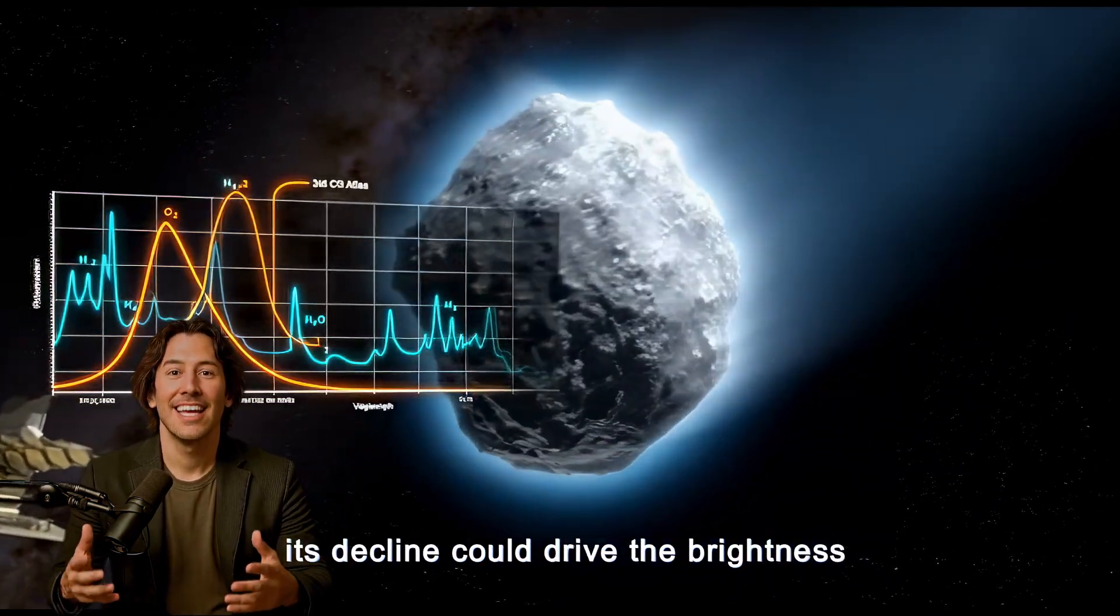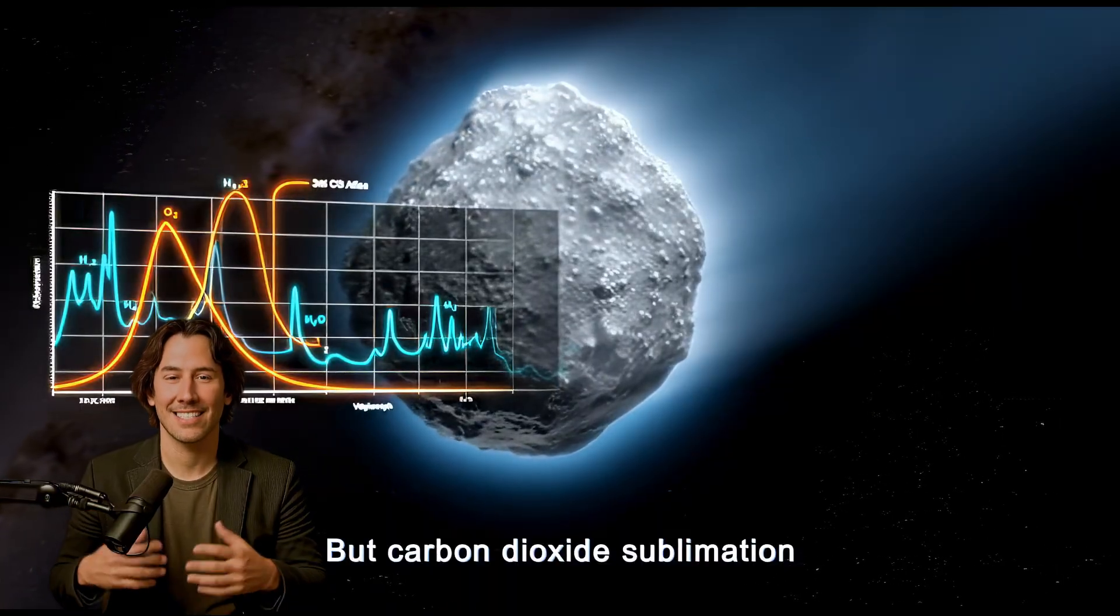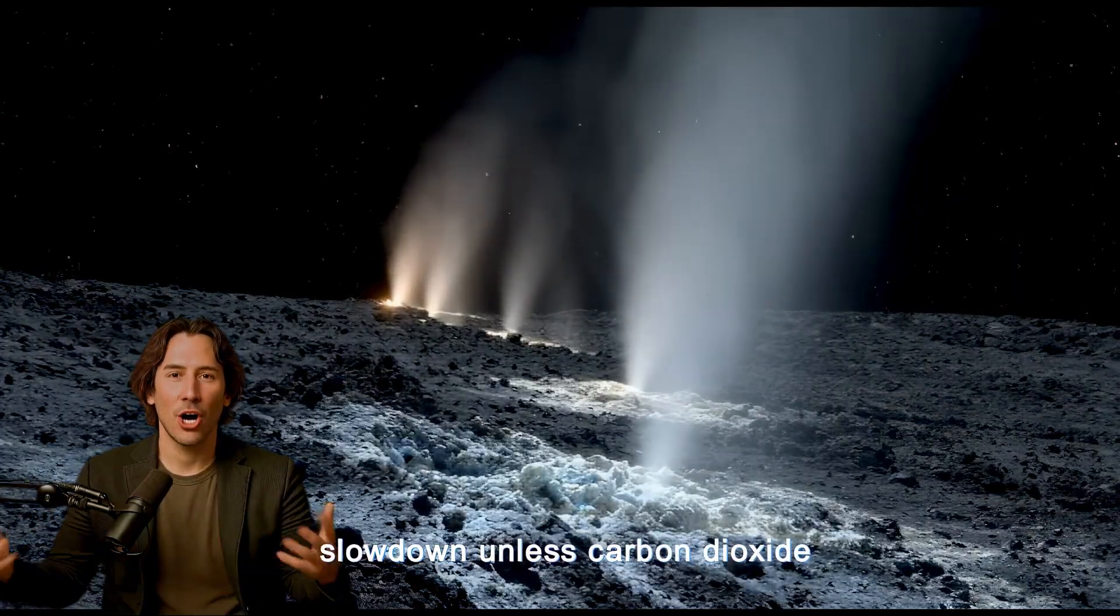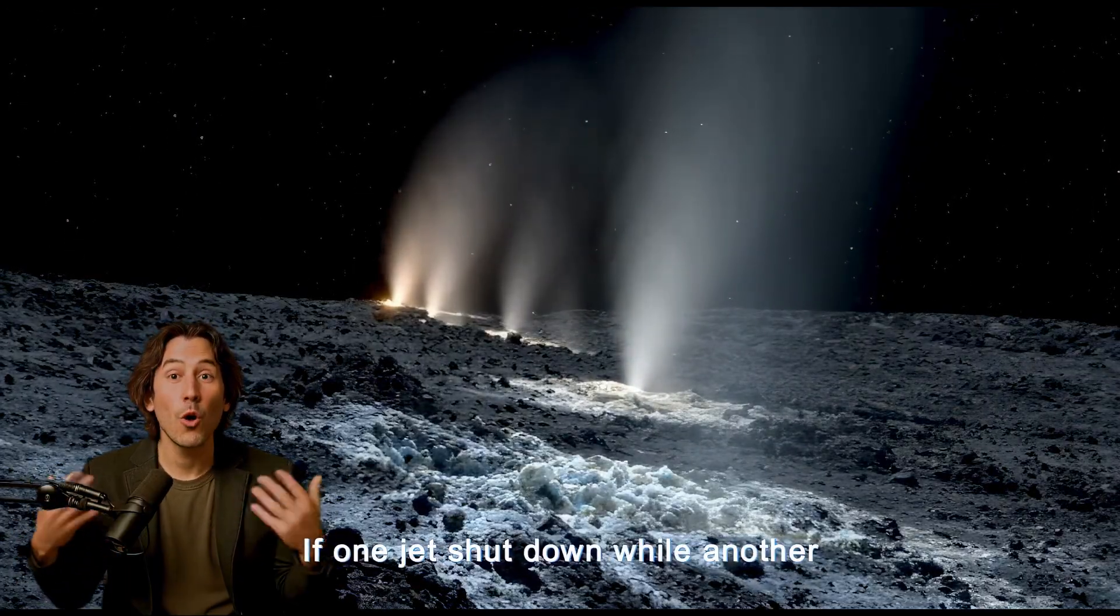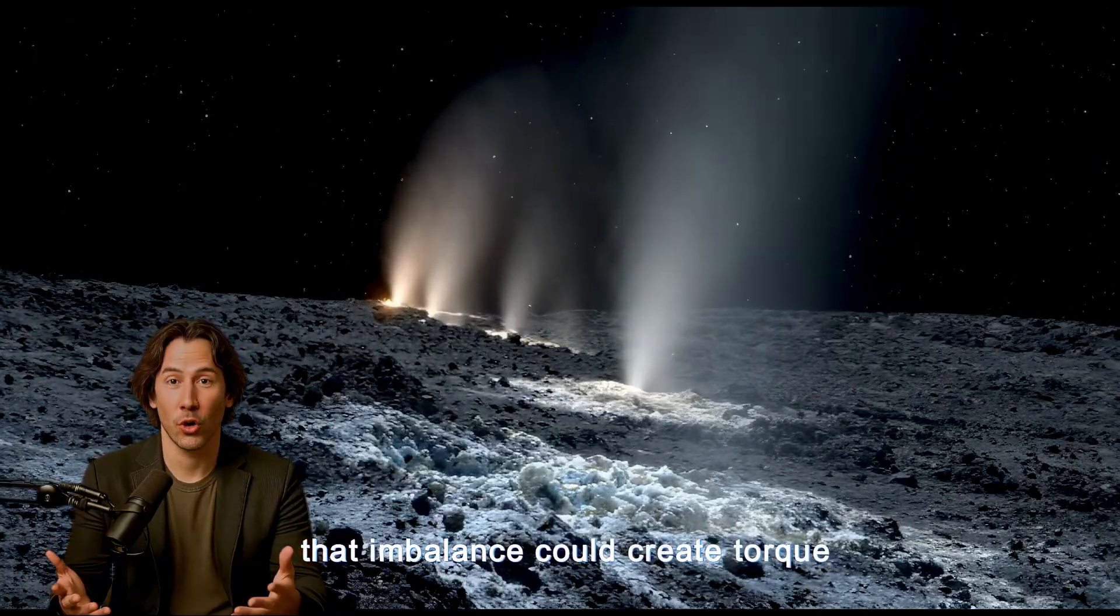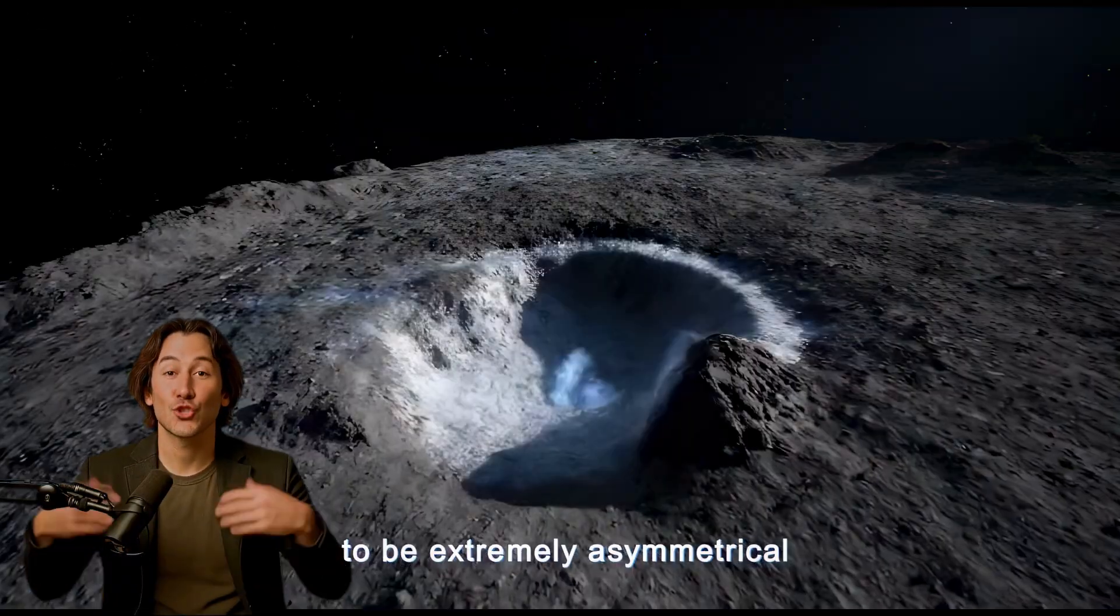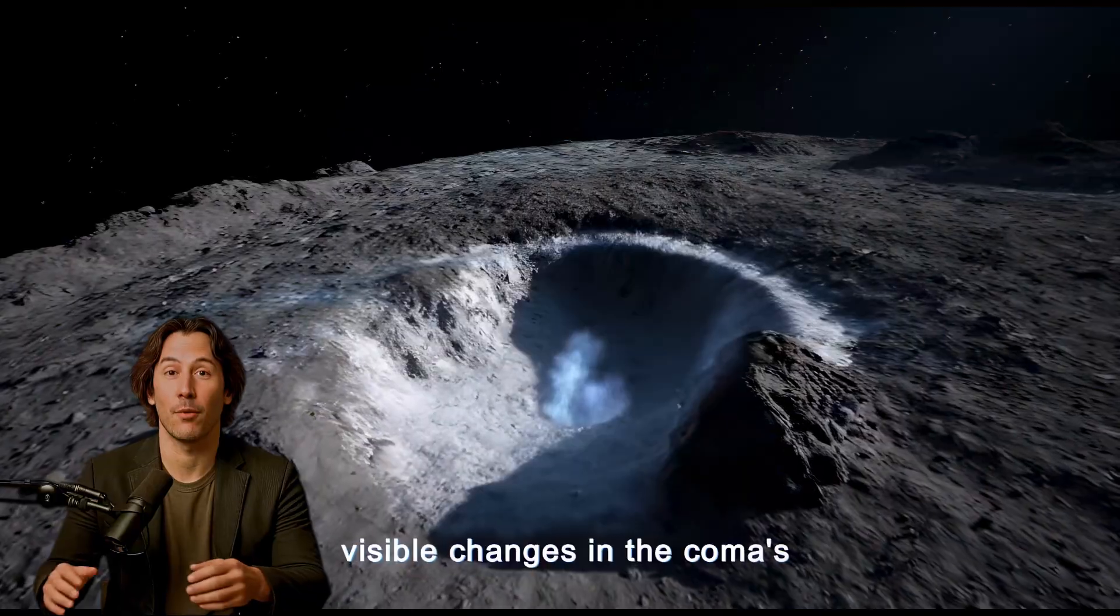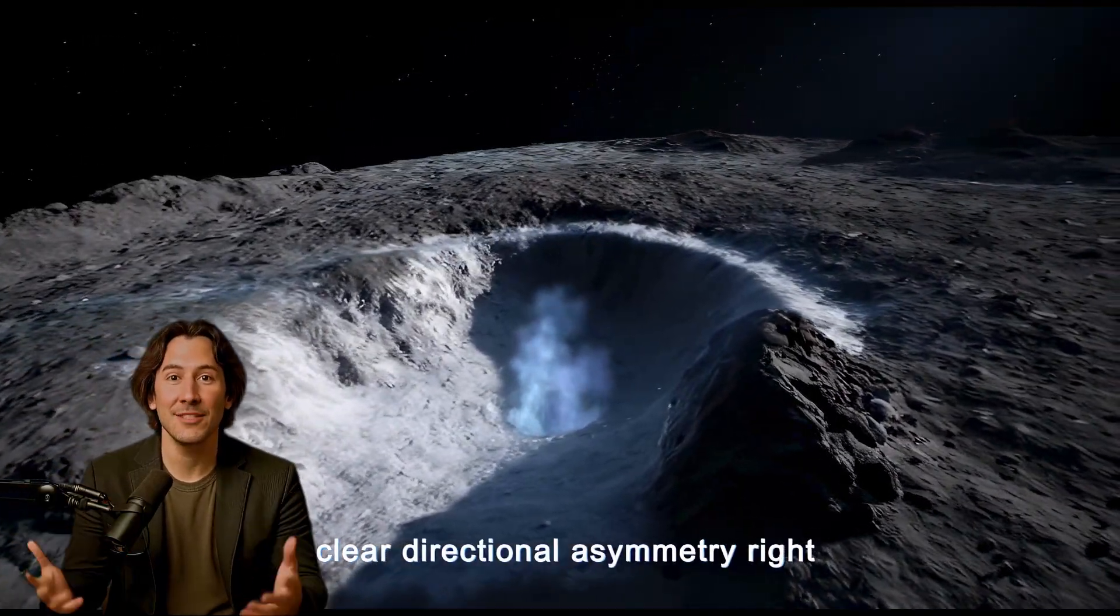If carbon dioxide was responsible for most of the earlier jets, its decline could drive the brightness drop. But carbon dioxide sublimation alone cannot explain a rotation slowdown, unless carbon dioxide jets were previously concentrated in a very specific region. If one jet shut down while another continued, that imbalance could create torque and slow the rotation. But this would require the jets to be extremely asymmetrical, something that should produce visible changes in the coma's structure. Yet the coma shape does not show clear directional asymmetry right now.